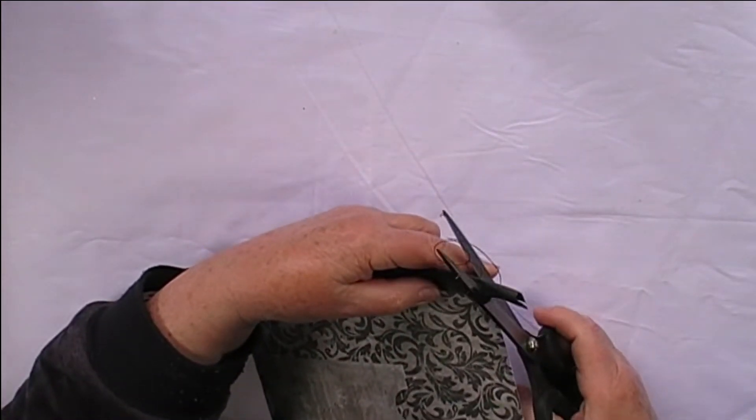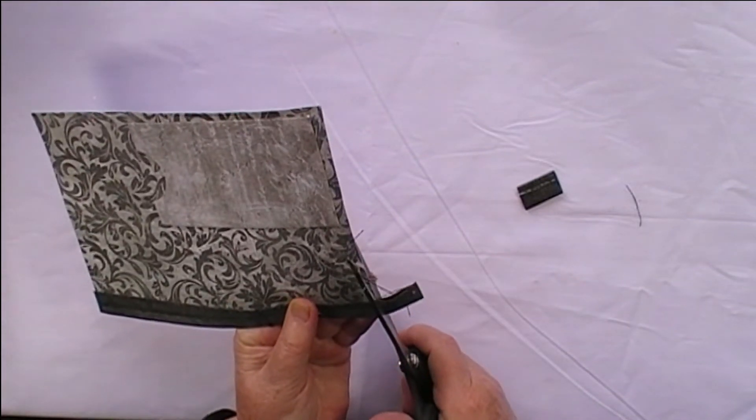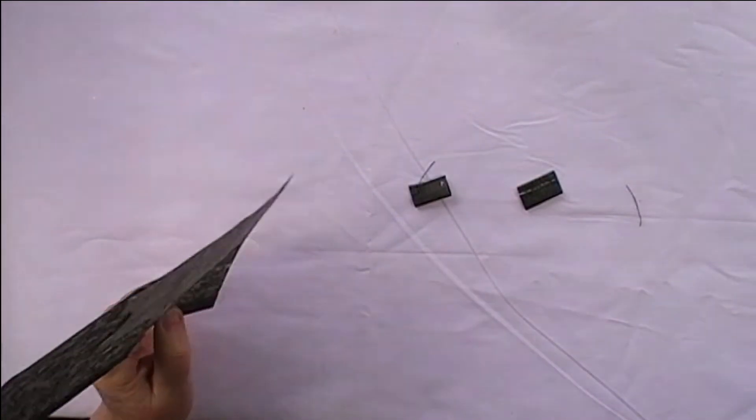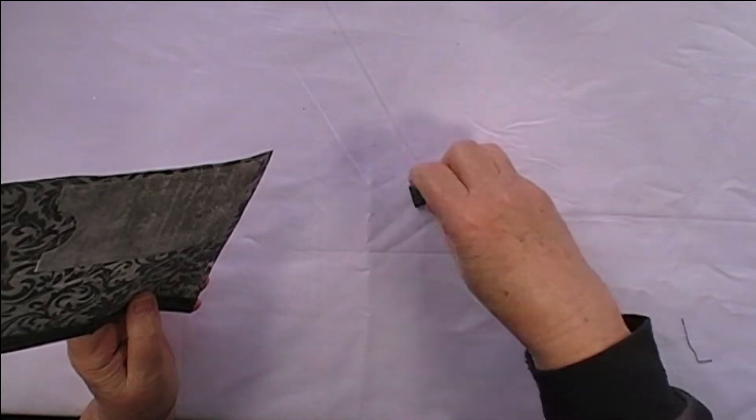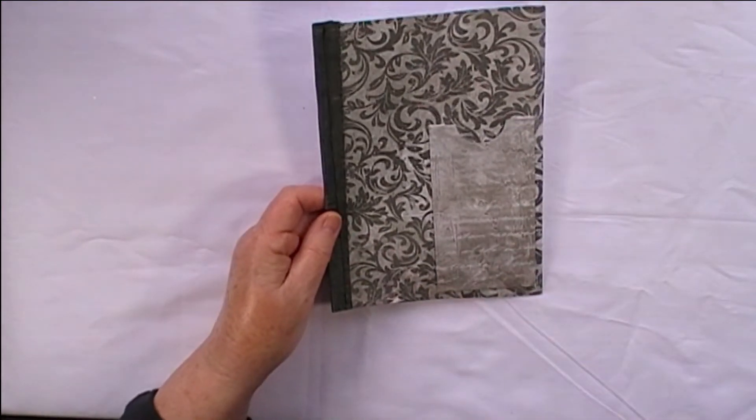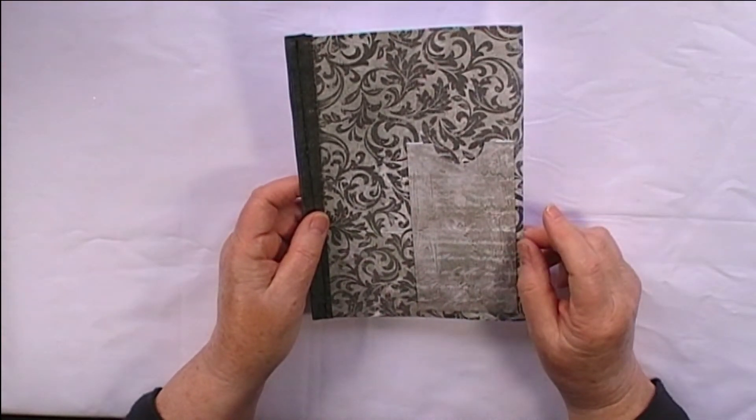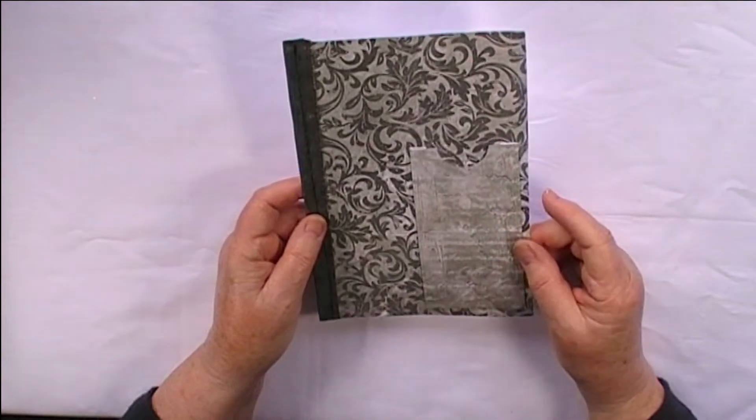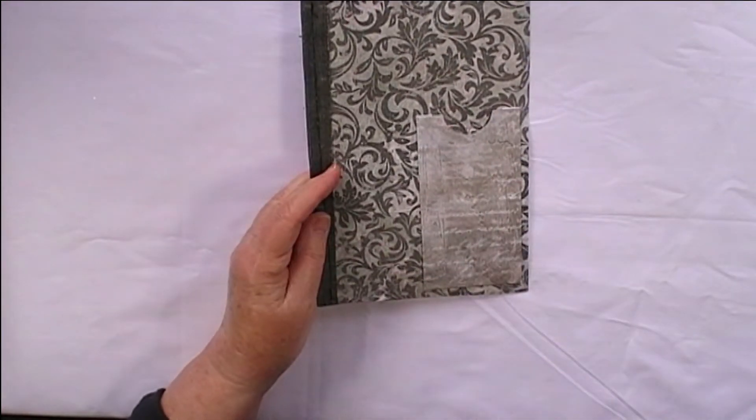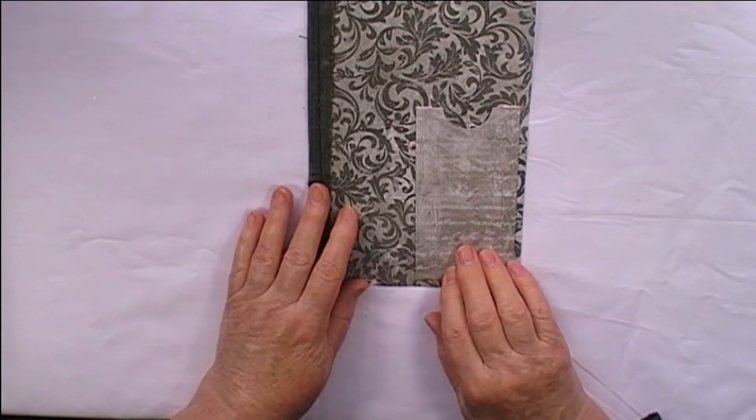I'll just trim off all the hanging edges. The good thing too about doing it this way is you can work on your pages before they're in the book if you want to. This one I've just applied a pocket. But going back to the actual binding...